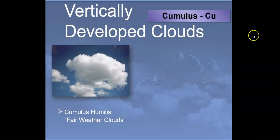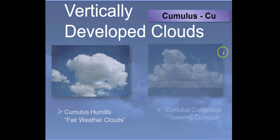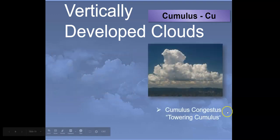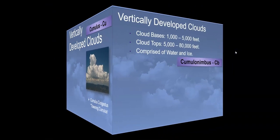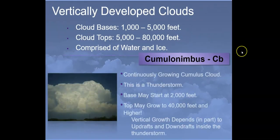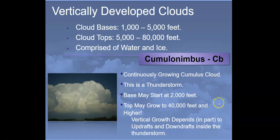Cumulus humilis are the fair weather clouds with gray bottoms and very white tops with a high albedo. Their cousin, the cumulus congestus, is the towering cumulus cloud — continuously growing as it picks up warm moist air. The cumulonimbus cloud is a continuously growing cumulus cloud and is the thunderstorm cloud. Bases can start as low as 2,000 feet but tops can grow to 40,000 feet and much higher, driven by updrafts bringing warm moist air and downdrafts inside the thunderstorm.